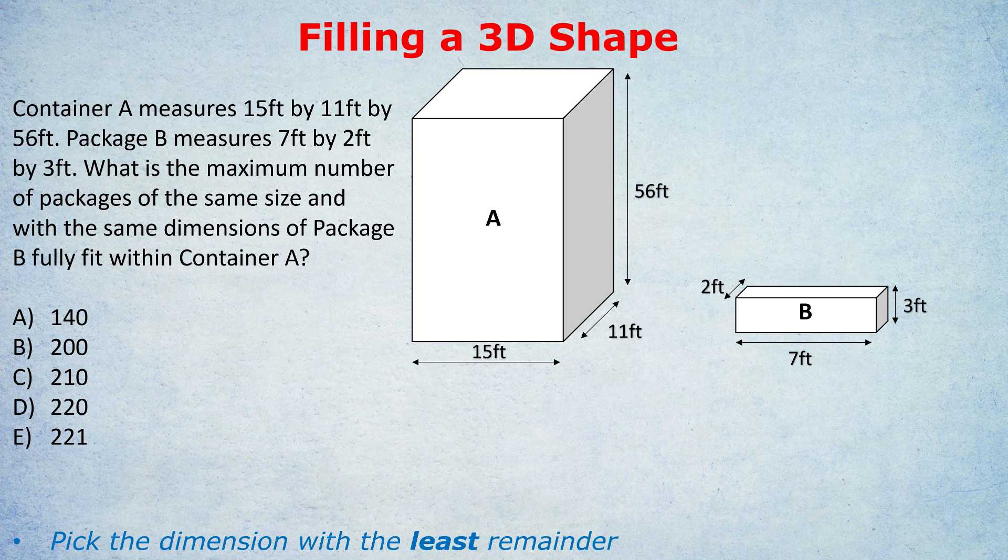You don't have to stick with the same order. The 15 could be divided by the 2, or the 7, or the 3. You don't have to just keep to the order that they gave the dimensions in. And if you don't believe me, look if I place the box this way. Then the 7 foot dimension, the width dimension, is now going to correspond to the height dimension of the larger container, the 56. And why might we do that? We do that because, as I've written down below, we're picking the dimension with the least remainder each time.